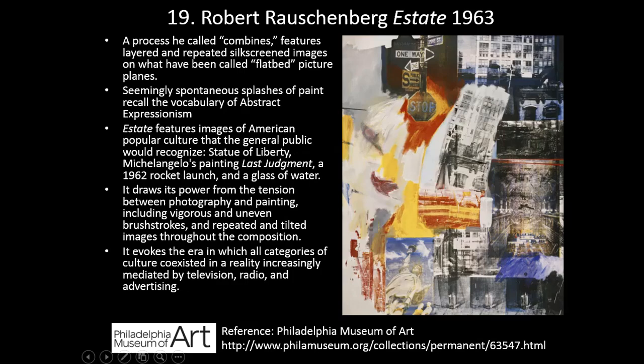Number nineteen — Robert Rauschenberg, Estate, 1963. In a process he called combines, he featured layered and repeated silk-screened images on what have been called flatbed picture planes. Seemingly spontaneous splashes of paint recall the vocabulary of Abstract Expressionism. Estate features images of American popular culture the general public would recognize — such as the Statue of Liberty, Michelangelo's Last Judgment, a 1962 rocket launch, and a glass of water. It draws its power from the tension between photography and painting and evokes an era in which all categories of culture coexisted in a reality mediated by television, radio, and advertising.